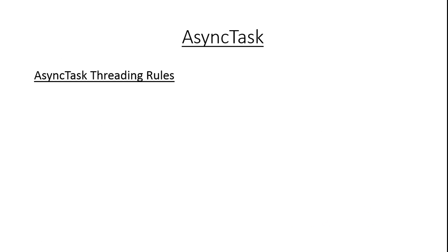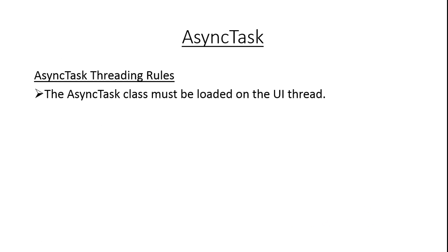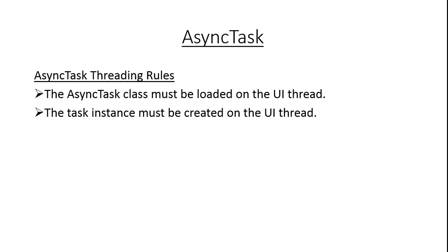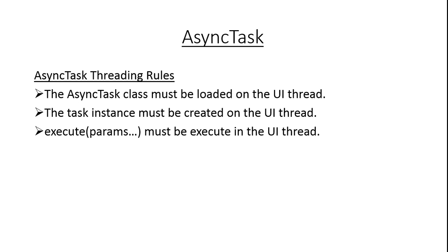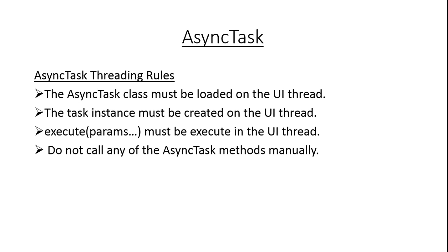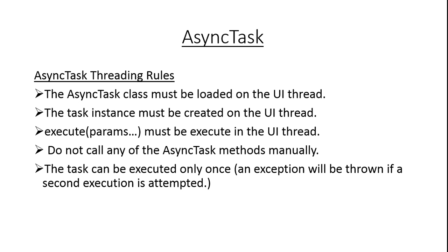You must follow some threading rules while using AsyncTask. First, the AsyncTask class must be loaded on the UI thread. Second, the task instance must be created on the UI thread. Third, the execute method must be called within the UI thread. Fourth, do not call any of the AsyncTask methods manually. Fifth, the task can be executed only once — an exception will be thrown if a second execution is attempted. These are the basic threading rules while working with AsyncTask.